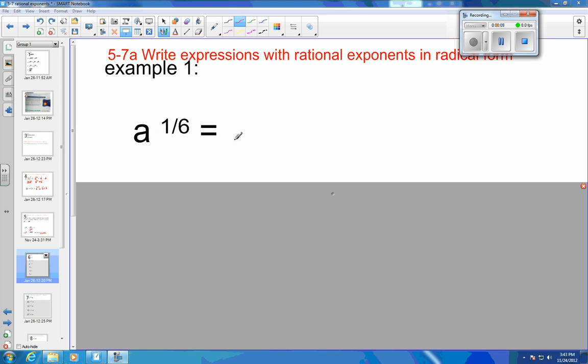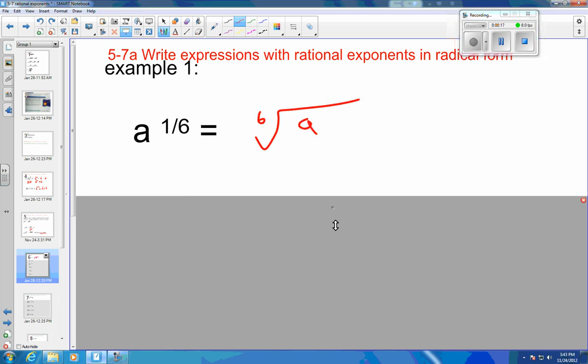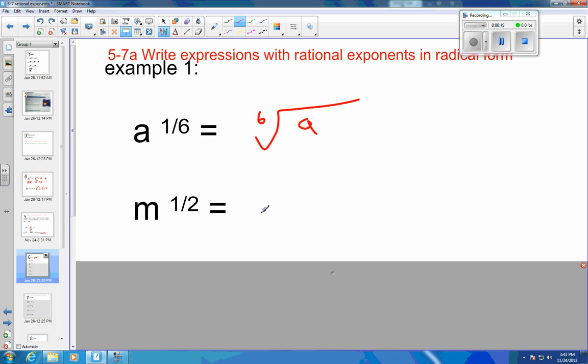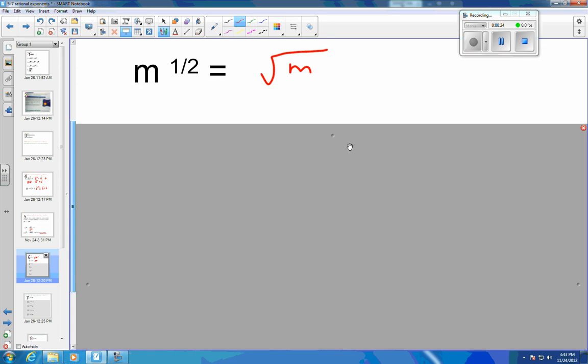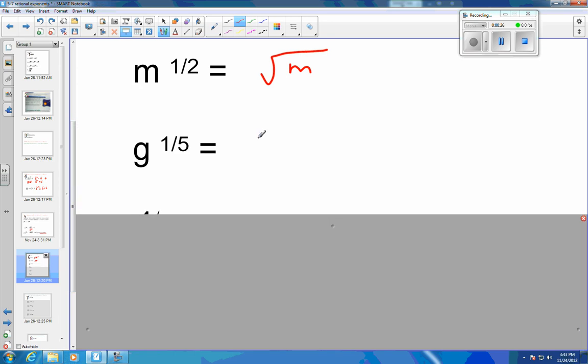We're just rewriting this in radical form. So 1/6 power just means the 6th root of A. 1/2 power would mean the square root of M. 1/5 power would be the 5th root of G.